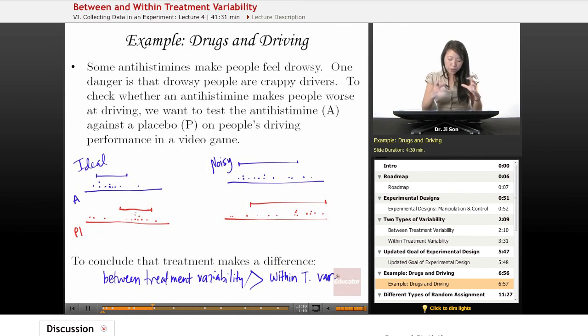The between treatment variability has to come out strong, and the within treatment variability has to be smaller. When we see that, then we can start to have more confidence in saying this treatment might make a difference.